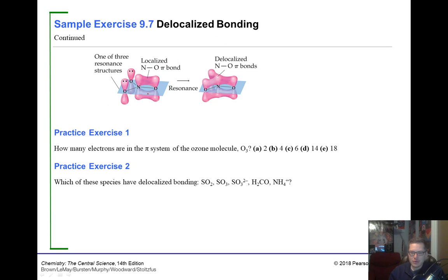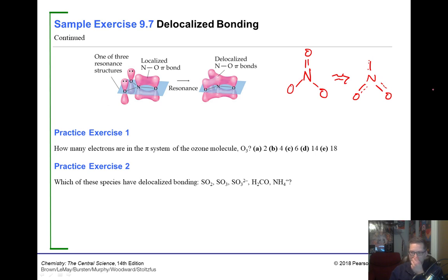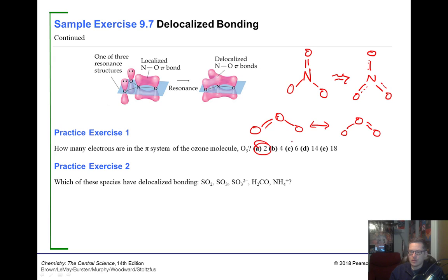NO₃⁻ is another example — it has a double bond that could be on any of the three oxygens via resonance, giving delocalized pi bonding. For ozone, you'd draw it with a double bond that can shift to another position via resonance. How many electrons are in ozone's pi system? There's one delocalized pi bond, so there are two pi electrons.